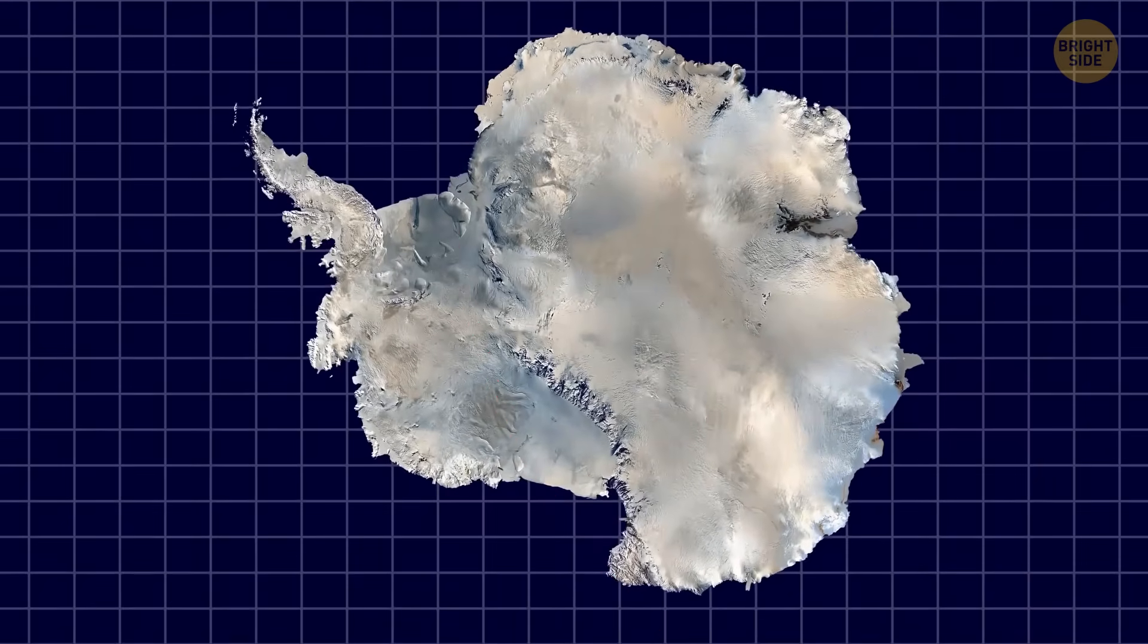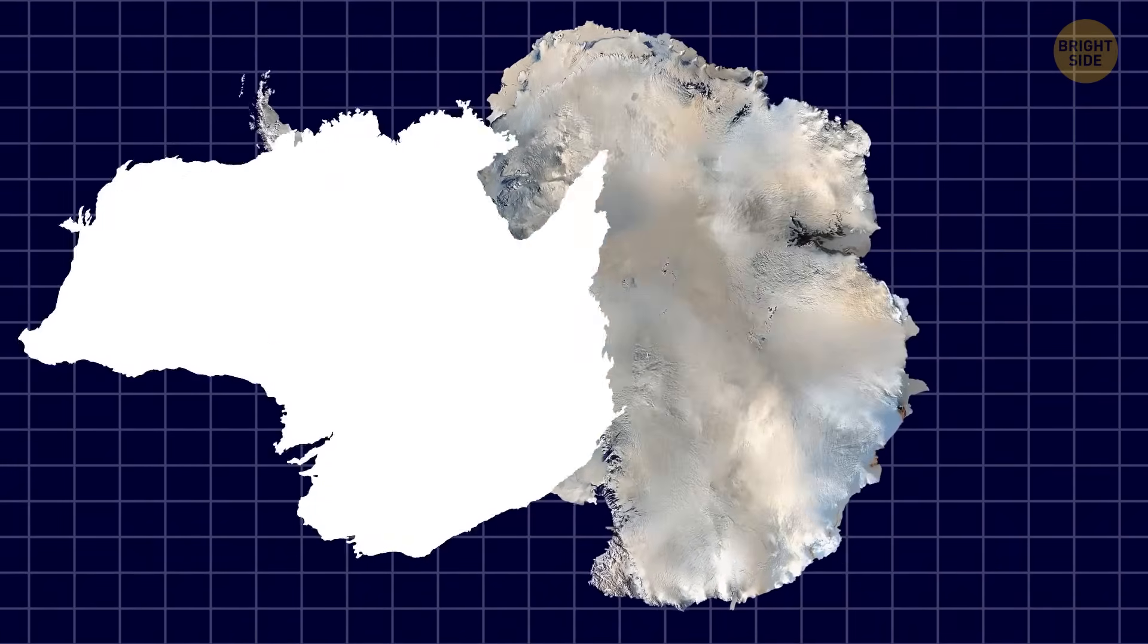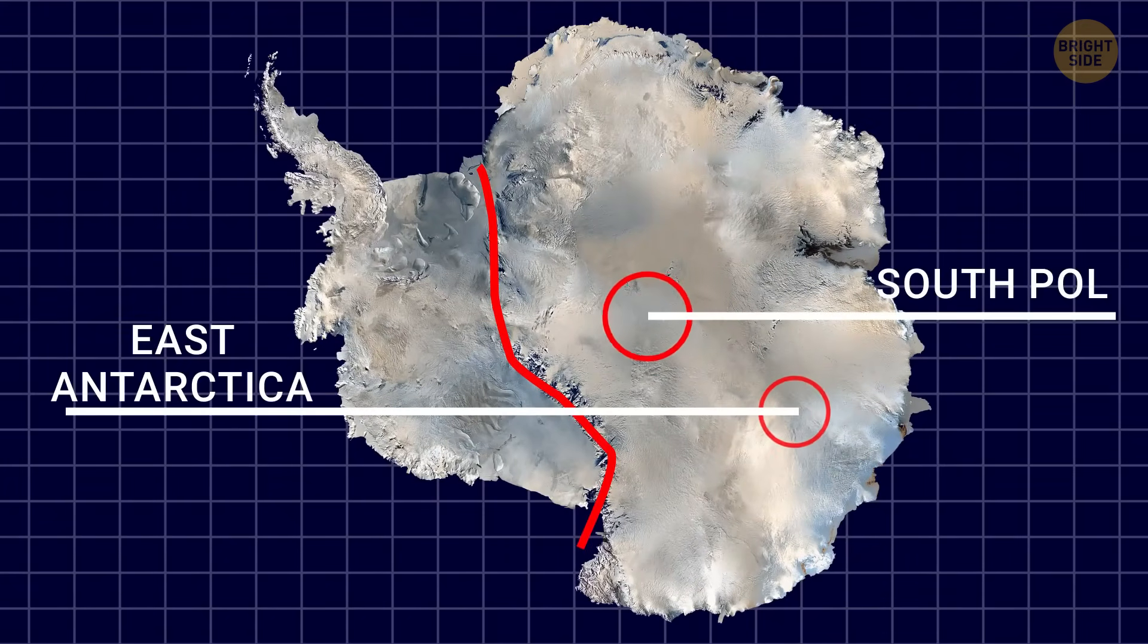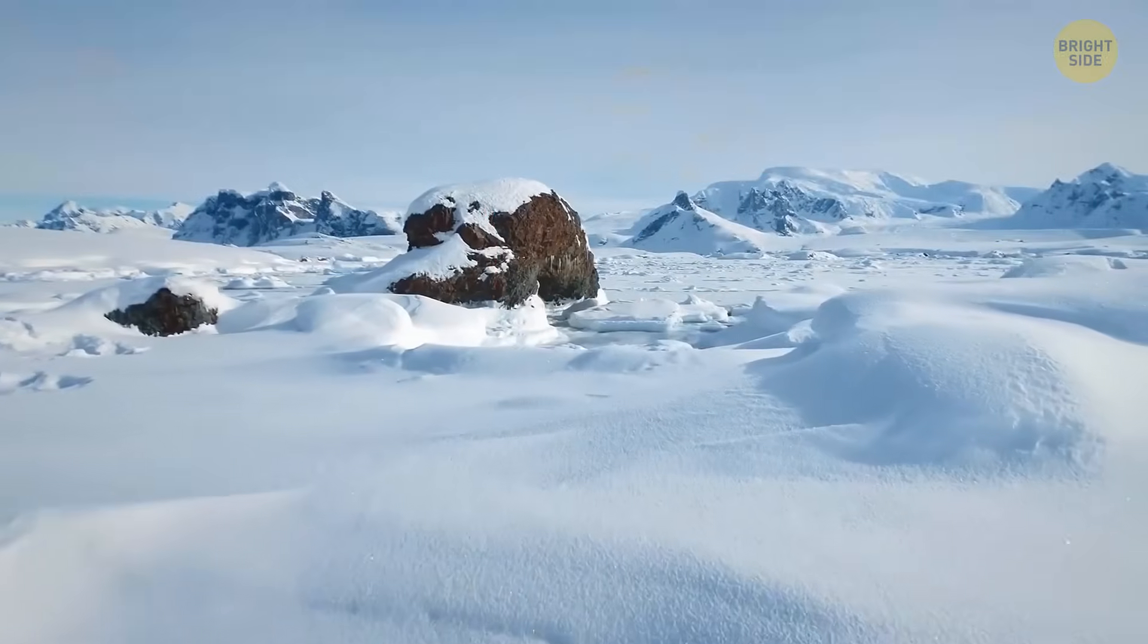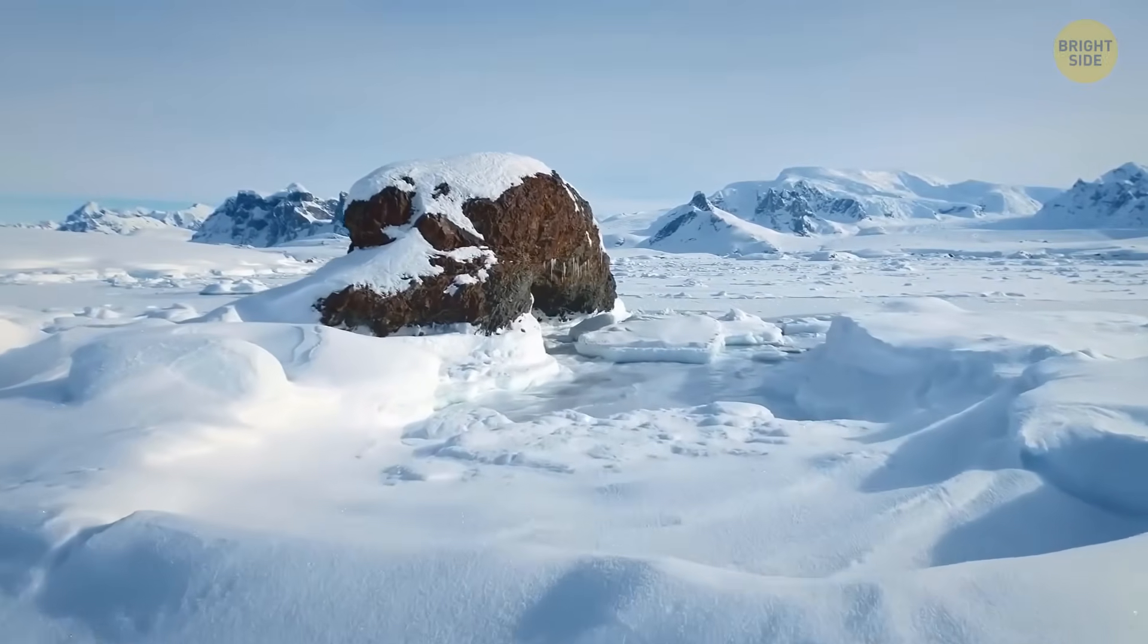The Greater Antarctica is a huge part, almost as big as Australia. It consists of East Antarctica and the South Pole. Beneath the ice, it's a place of rocks that have been around for a very, very long time, including the special zone we mentioned.